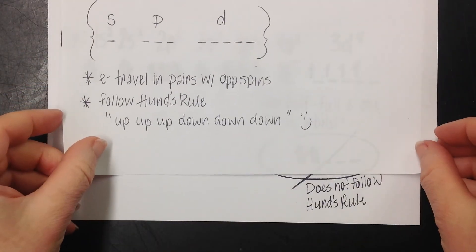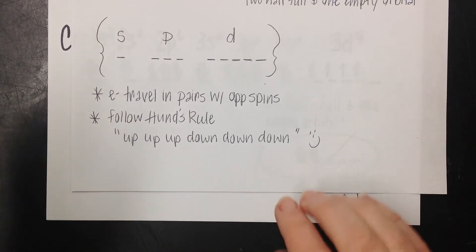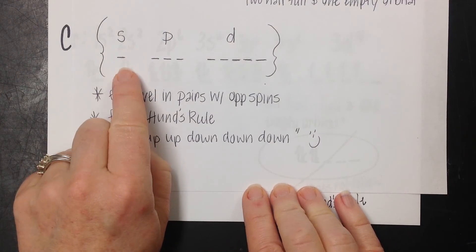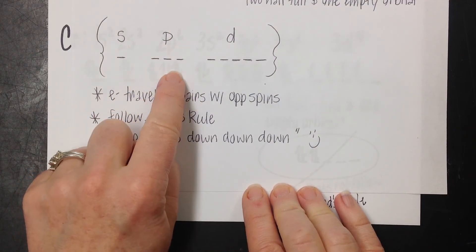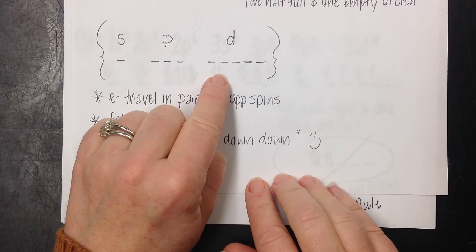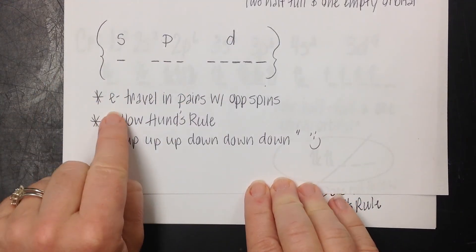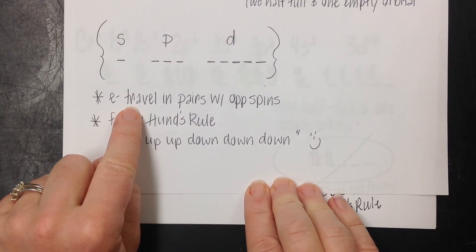Another note that you may want to jot down. It's always wise to remember that the S-sublevel has one orbital, the P-sublevel has three, and the D-sublevel has five. Also, you may want to make a note that electrons travel in pairs with opposite spins.